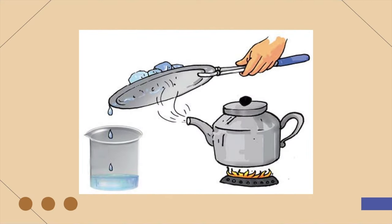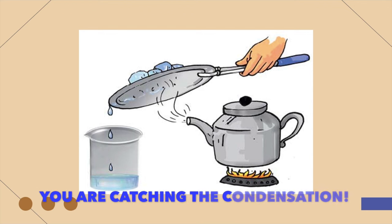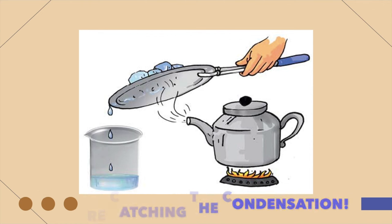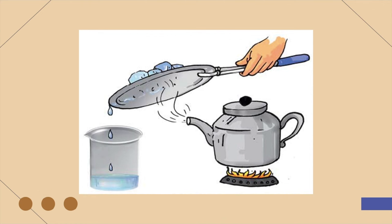Here's an example of how you can get drinkable water from salt water. You take the salt water and put it in the kettle. You boil the water and it evaporates. As it evaporates, you catch it with a lid with ice cubes on top and have it drip into another beaker. This separates the salt, which will be left in the kettle, from the water that is now in the beaker.